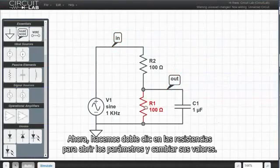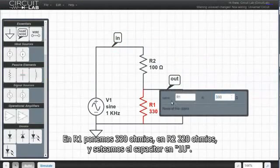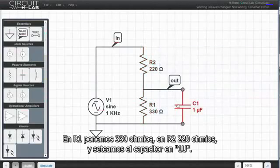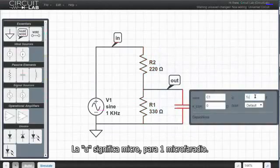Now I can double click the resistors to bring up the parameters and change their values. I set this one to 330 ohms, and R2 to 220 ohms, and set the capacitor to 1u. The u means micro, for 1 microfarad.